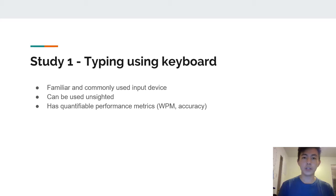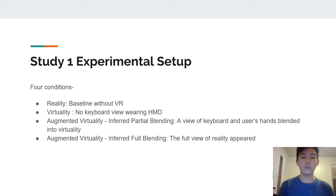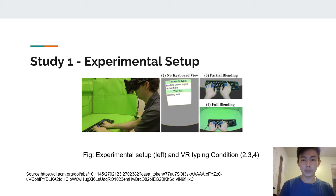Study one was regarding typing on a keyboard. The keyboard was used because it is familiar and the most commonly used input device — it can be used unsighted and has quantifiable performance metrics like words per minute, accuracy, etc. The experiment had four conditions: the baseline being reality without VR; virtuality with no keyboard view while wearing the head-mounted display; augmented virtuality with only partial blending, where the keyboard was only displayed when the hand reached out for it and the user tilted their head toward it; and augmented virtuality with full blending, where there was a full view of the keyboard. This figure shows each of those conditions.